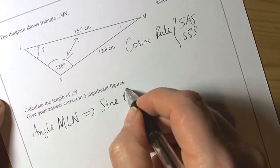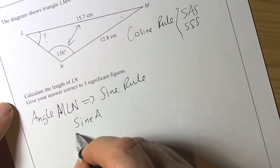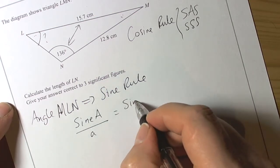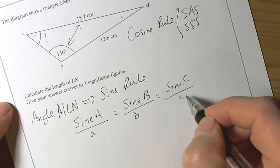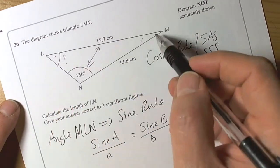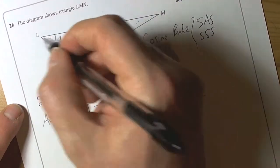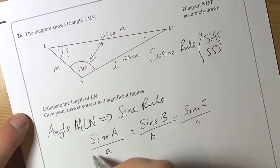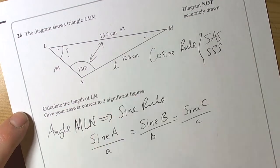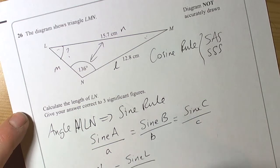We're going to use the sine rule to start with. From the front of the exam paper, the sine rule says — because we want an angle — that sine of A over little a equals sine of B over little b equals sine of C over little c. This triangle works with L's and M's, so we replace all these with the correct letters: big L, little l, big N, little n, big M, little m. The rule we're going to use involves N and L, so that's sine of N divided by little n equals sine of big L divided by little l.